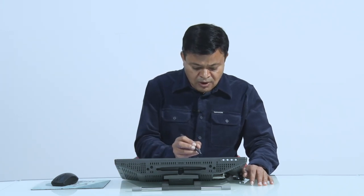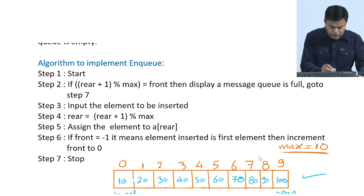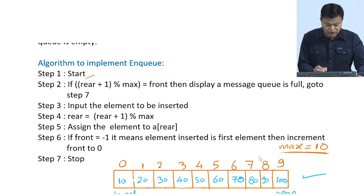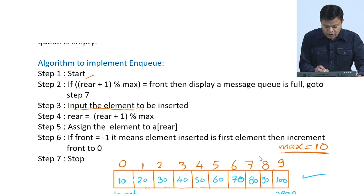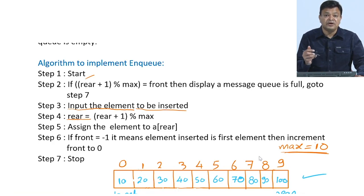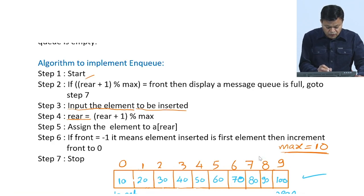Going back to the algorithm: Step 1 is start. Step 2 checks if (rear + 1) mod max equals front — if so, display 'queue is full' and go to the last step. Step 3: if the queue is not full, input the element to be enqueued. Step 4: update rear using rear = (rear + 1) mod max, so rear grows from 0 to 9 and then wraps back to 0, making this a circular queue.